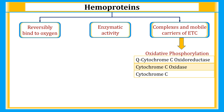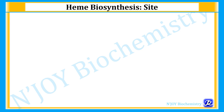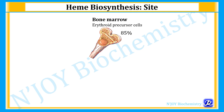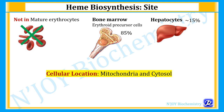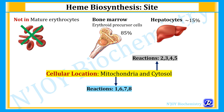Now let's see heme biosynthesis. It primarily occurs in the bone marrow — erythroid precursor cells — where 85% of heme biosynthesis occurs, and 15% occurs in hepatocytes. Heme biosynthesis cannot occur in mature erythrocytes because they lack mitochondria. The cellular location of heme biosynthesis is both mitochondria and cytosol. There are 8 reactions: reactions 1, 6, 7 and 8 occur in mitochondria, while reactions 2, 3, 4 and 5 occur in cytosol.